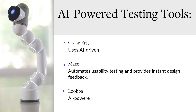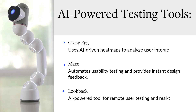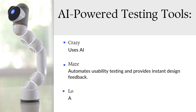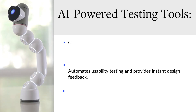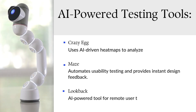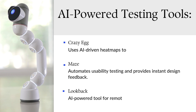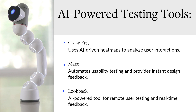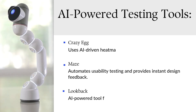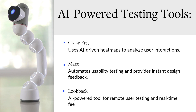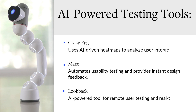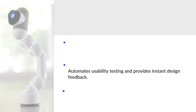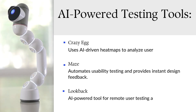Let's talk about some of the AI-powered testing tools. First is Crazy Egg, which uses AI-driven heat maps to analyze user interactions. Next is Maze, with which you can automate usability testing and get instant design feedback. Then there is Lookback, an AI-powered tool for remote user testing and real-time feedback.